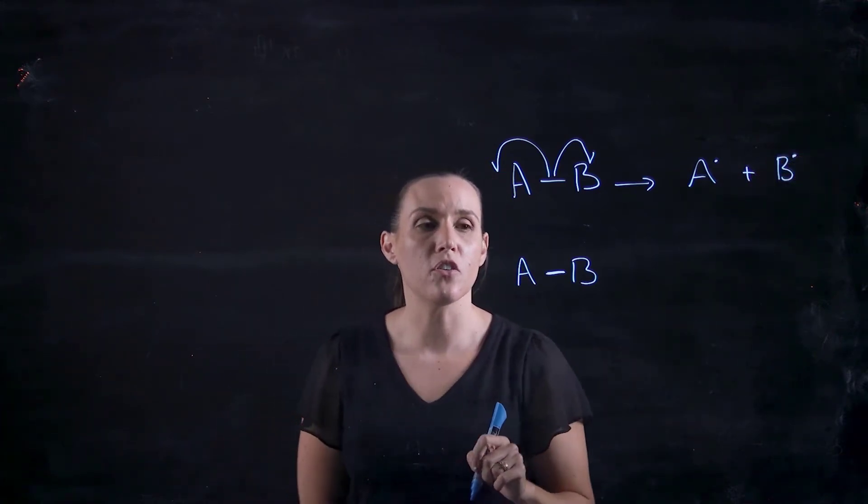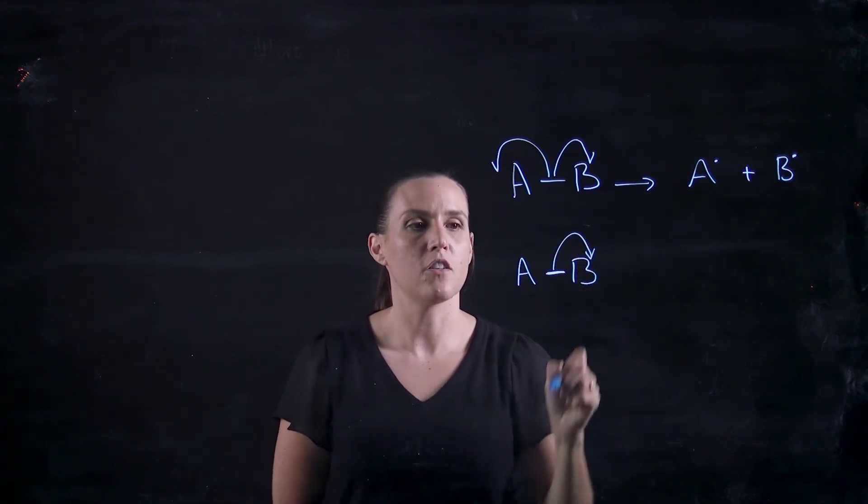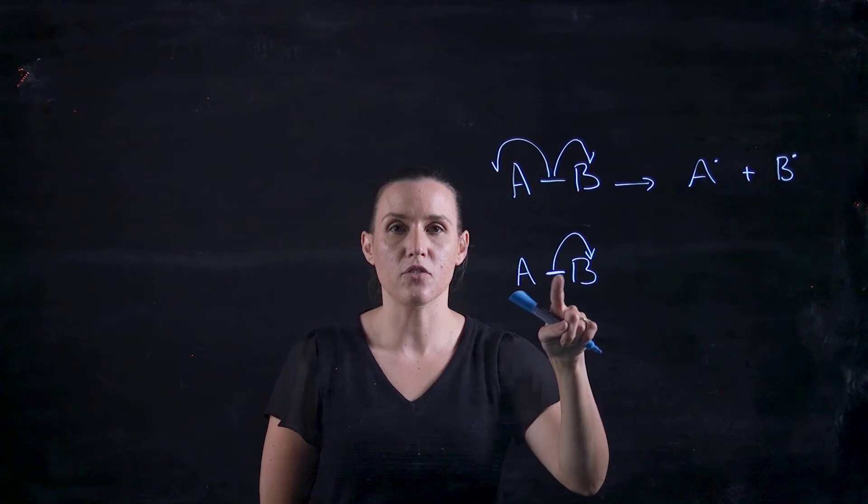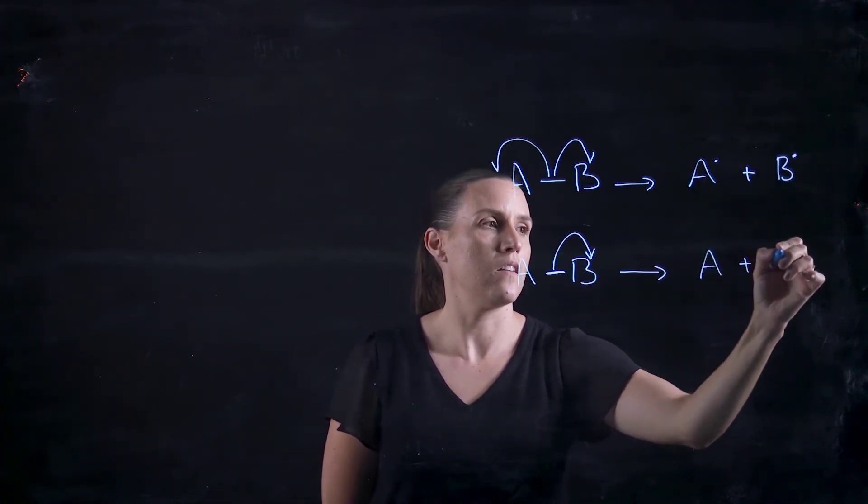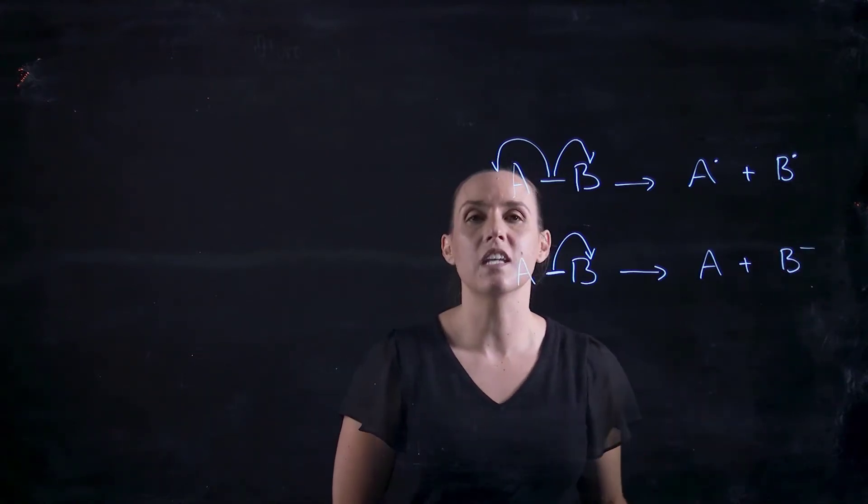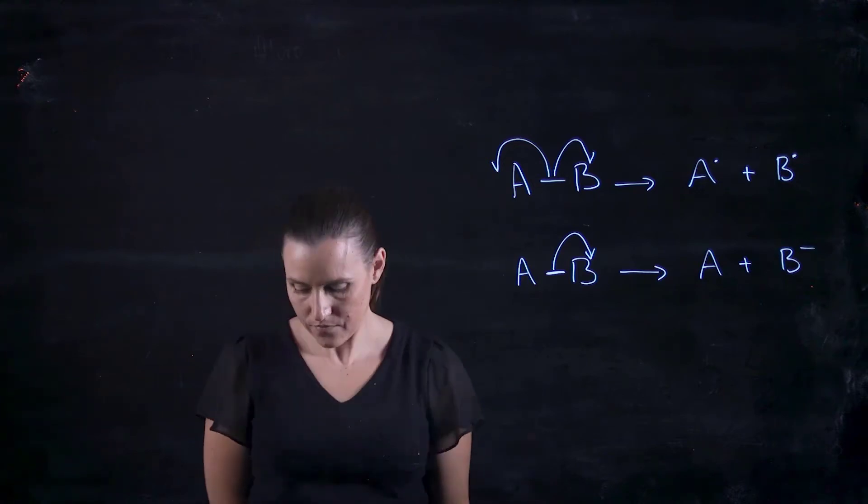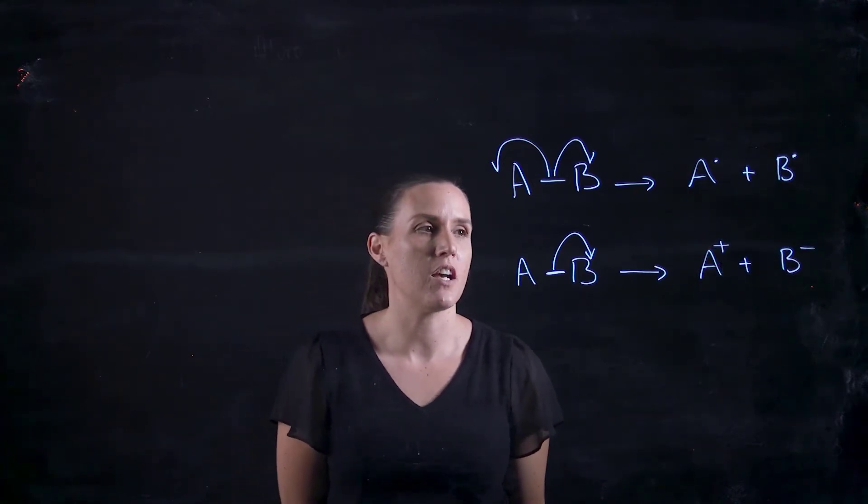Now, with this next one, I'm going to show you that B will take both of those. So B is taking both of those electrons that are being shared and owning them now. Because it's picked up those two electrons, it's going to get a negative charge on it. Because A doesn't have those electrons, it's going to get a positive charge.